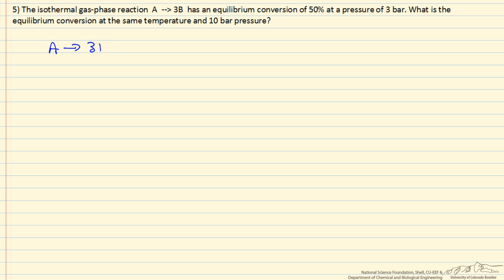Calculate the equilibrium constant from the initial data. A goes to 3B, and I can write the reaction as saying we start out with 1 mole of A and no moles of B, and then we have some extent of reaction.